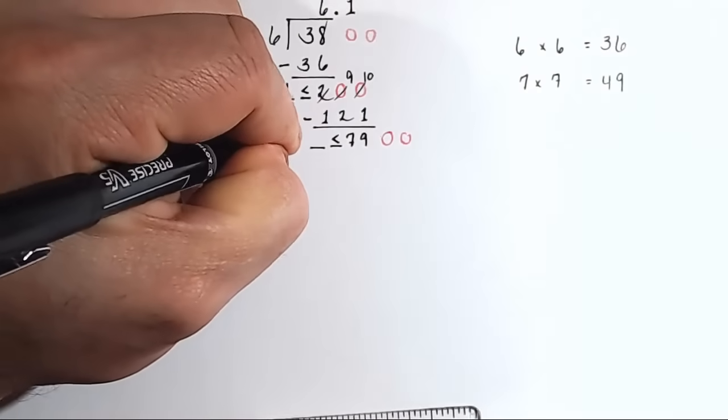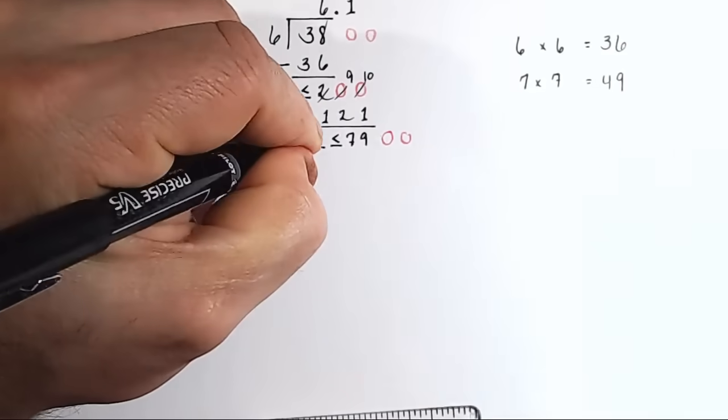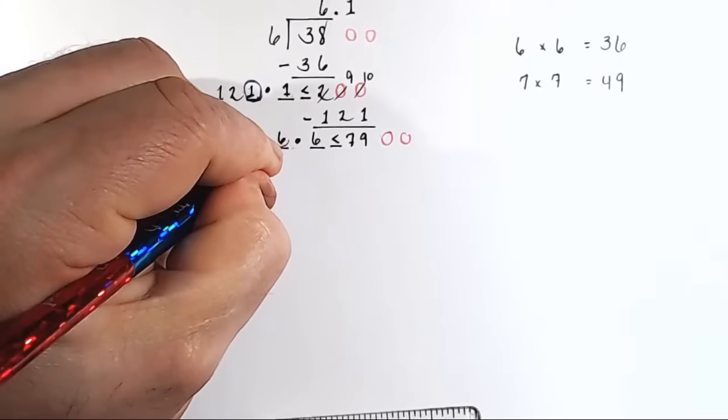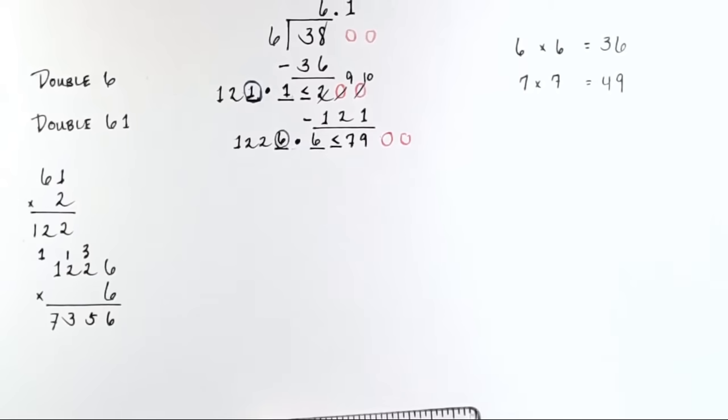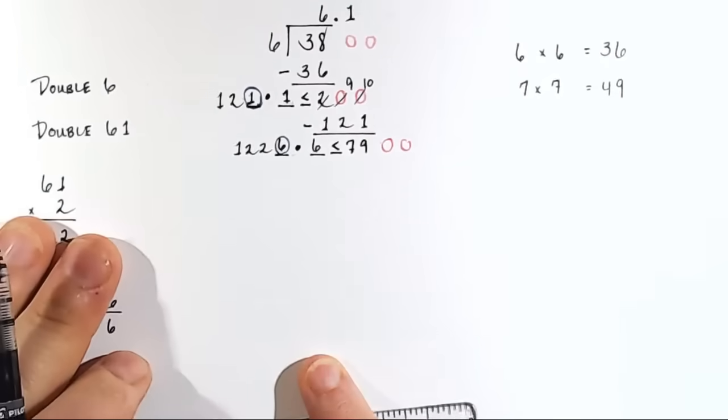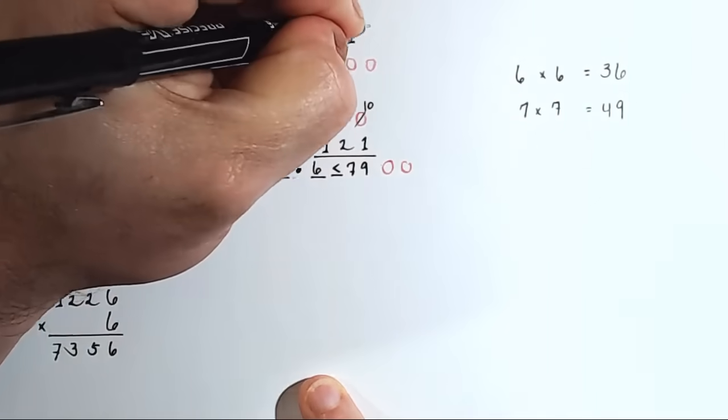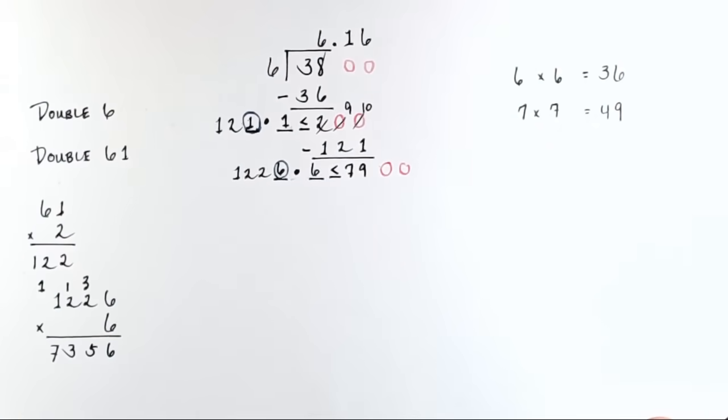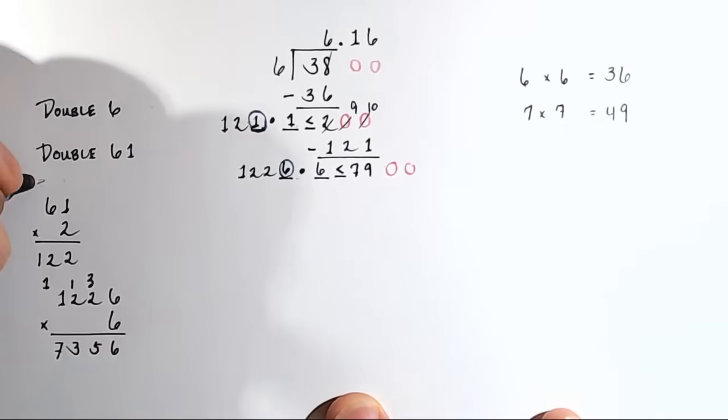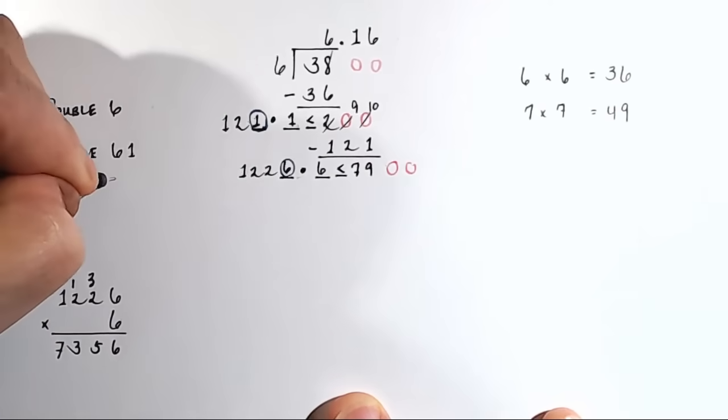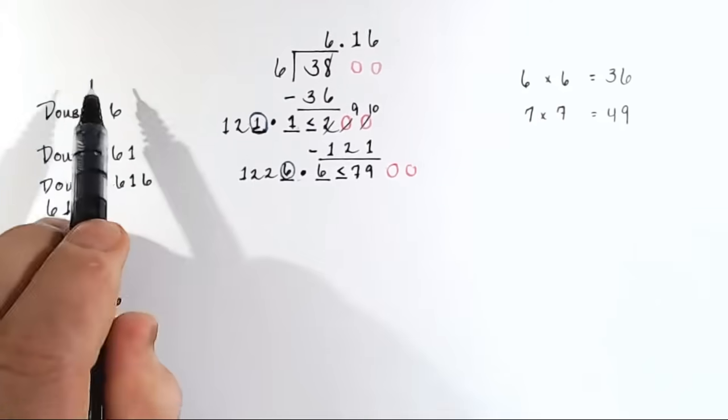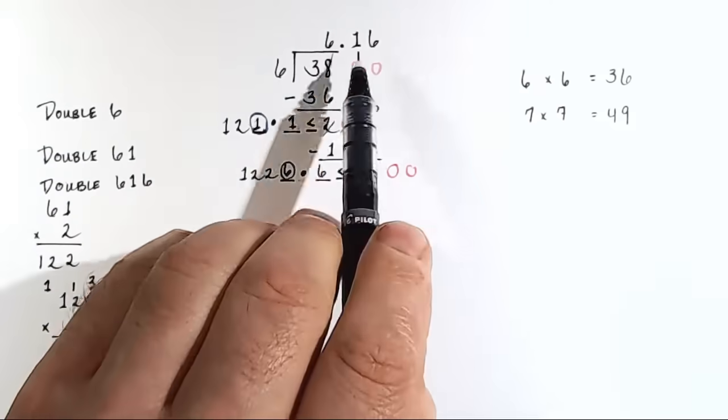So we'll go up here and put a 6 here and a 6 here. And that means that 6 is the next digit in the approximated square root. So we'll go up here and put a 6. Now, if you wanted to continue this process, you would double 6, 1, 6. So when we double these numbers, we're taking the numbers without the decimal.